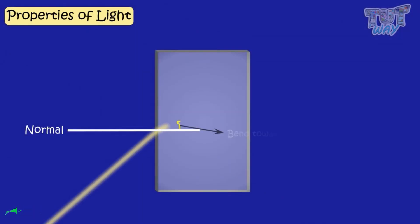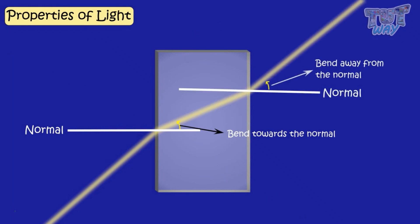Light bends towards the normal when it enters the denser medium, and light bends away from the normal when it enters the lighter medium.